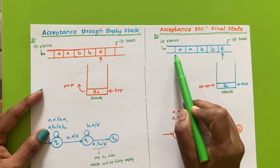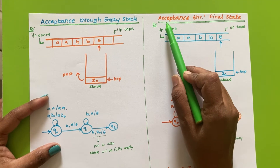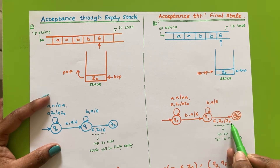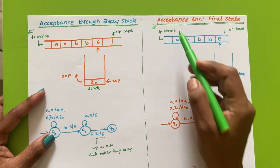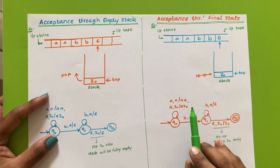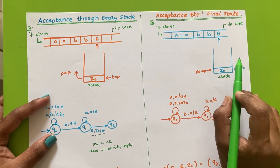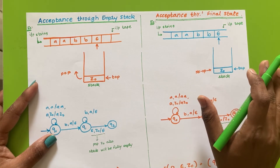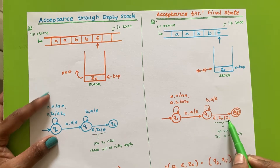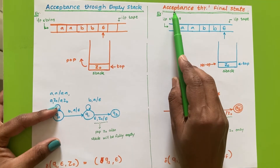In case of acceptance through final state, the situation is the same: we are reading empty input after reading the whole string, and the top of stack is Z0. However, to draw the PDA by acceptance through final state, that transition will be represented as empty comma Z0 comma Z0 — meaning we have to perform no operation on the stack. We don't want to push or pop; we keep the stack as it is. The top of stack remains Z0 and will not change at all.